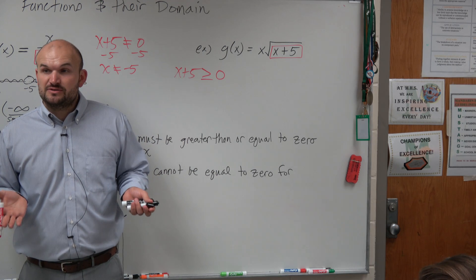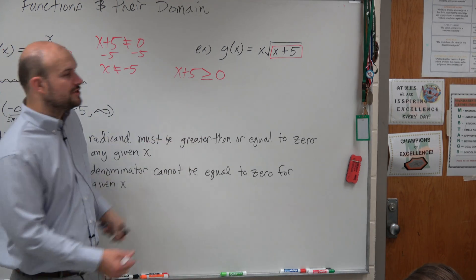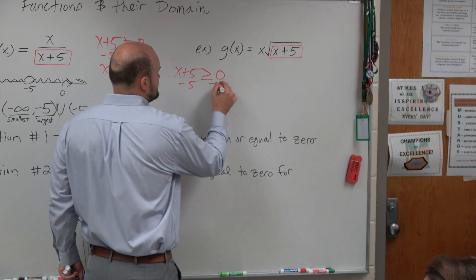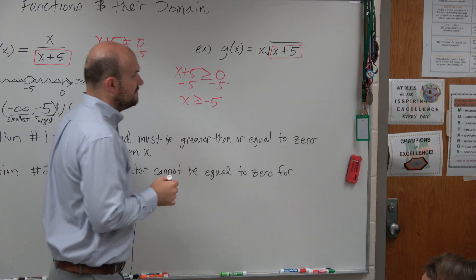And that's the values of x we want to figure out. So now, all we got to do is find the values of x that make that true. So we'll solve for x. x has to be greater than or equal to negative 5.